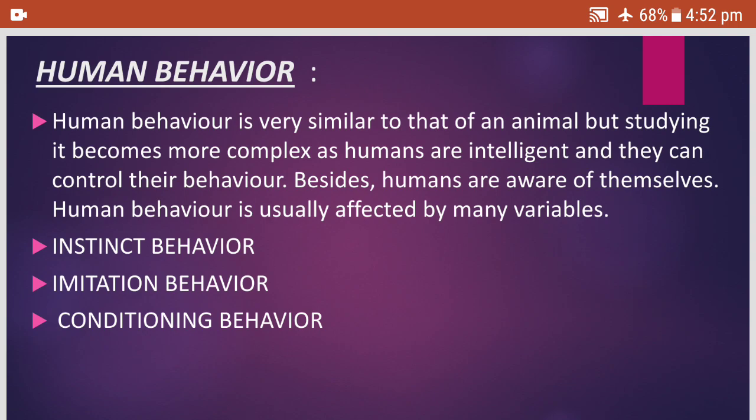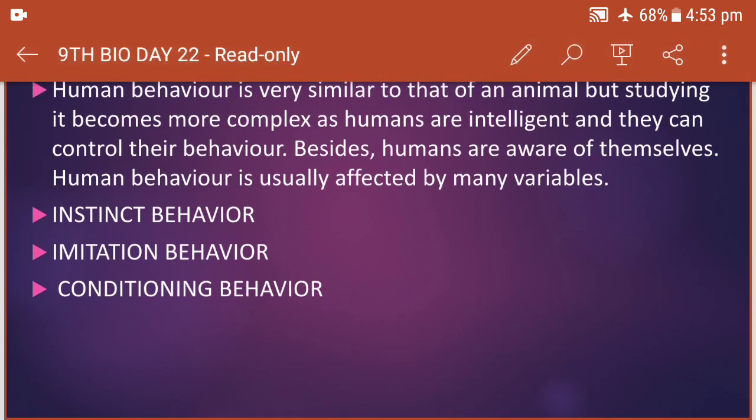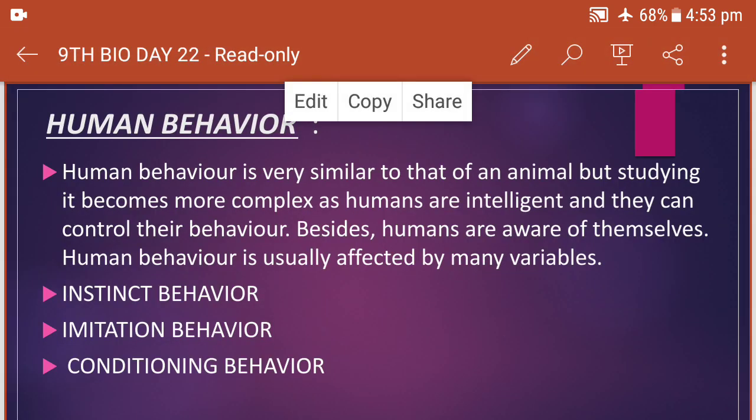What are the three different types of human behavior? Instinct — that need not be learned — our reflex actions, which I have discussed already in animal behavior. Imitation, which we mostly do when we constantly meet people. And conditioning, from our daily life experiences, where we become accustomed to certain things.